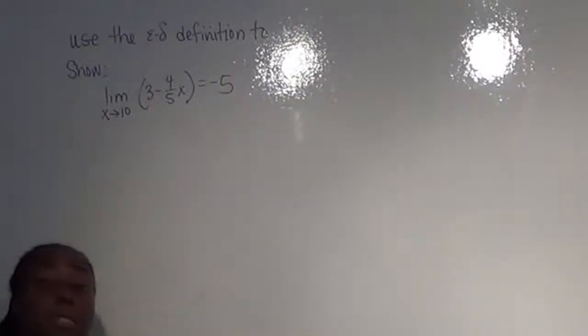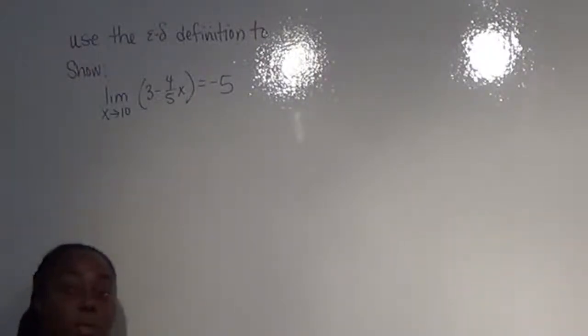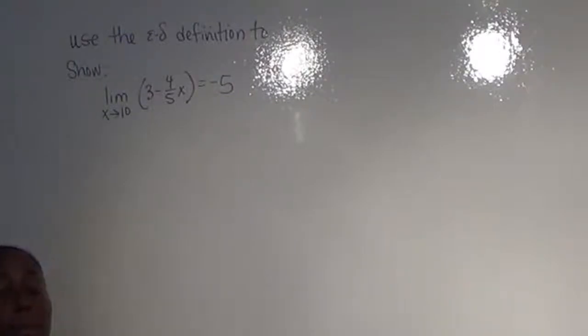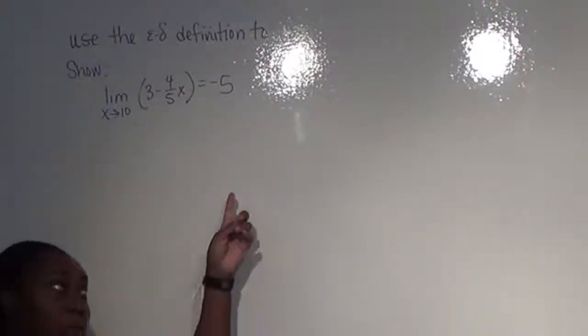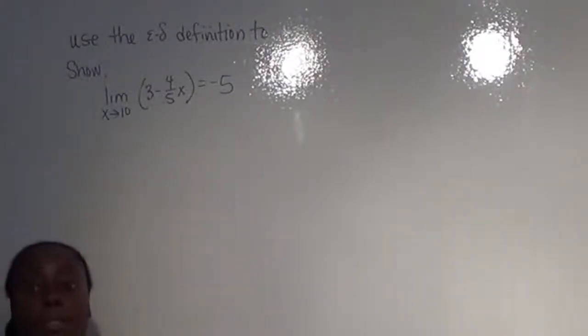So what this means is we want to find a delta such that the distance between x and the value of 10 is less than delta, and such that the distance between the function value at x and the function value at 10, which we're assuming is this limit, is less than epsilon. So we basically need to find those two values, epsilon and the delta.